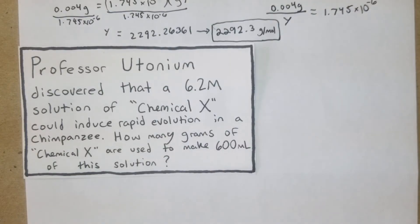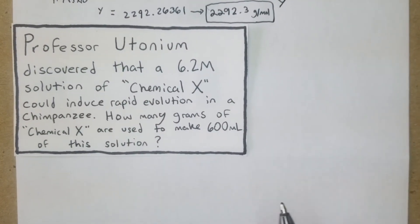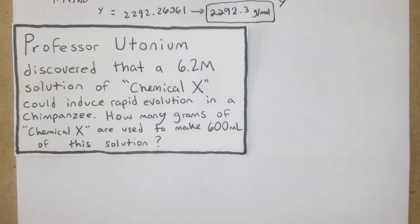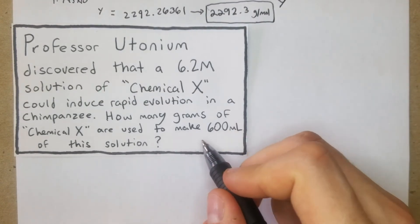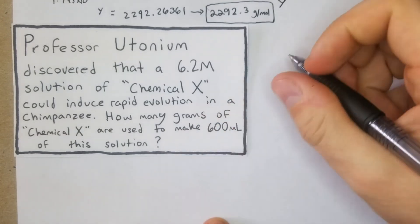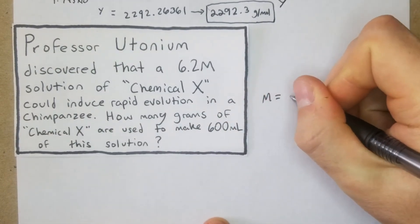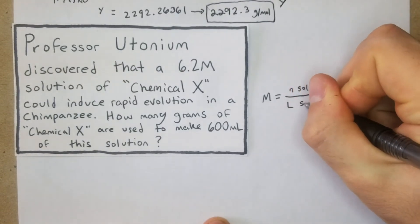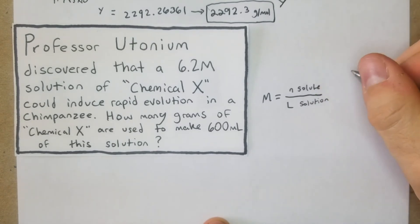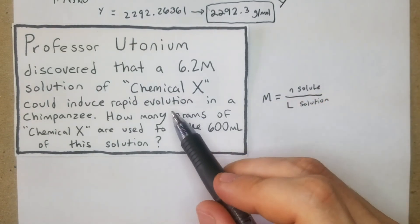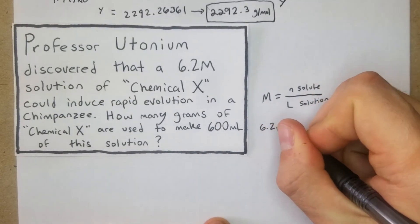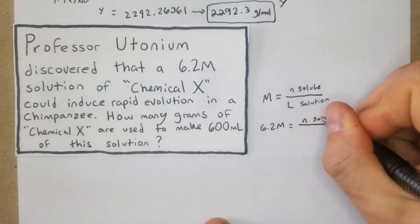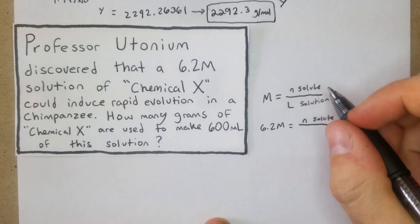This is kind of a silly goofy question, but the point is basically we're trying to take what we had in that last problem and take it one step further. How many grams are in this solution? We'll start with molarity equals n of solute divided by liters of solution. We know that we're looking for a 6.2 molar, so we have 6.2 M equals n of solute over our solution, which is going to be 600 mL, so that's 0.6 liters.